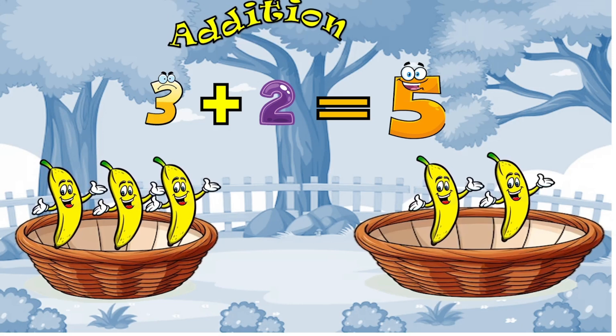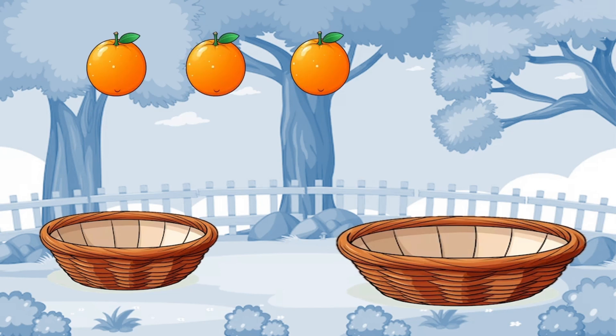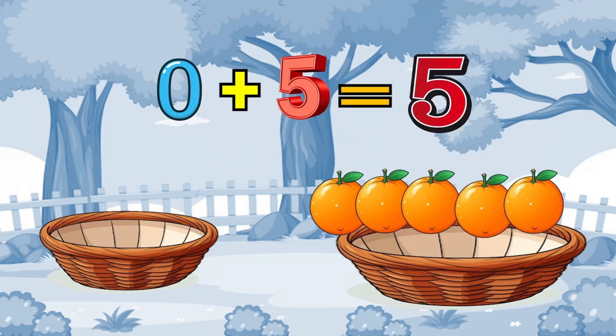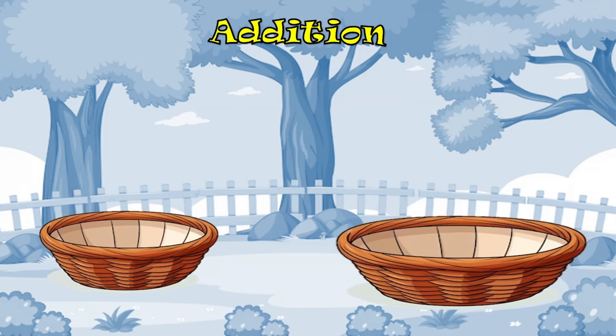These are some oranges. How many oranges are there? 0 plus 5 is equal to 5. 0 plus 5 is 5.